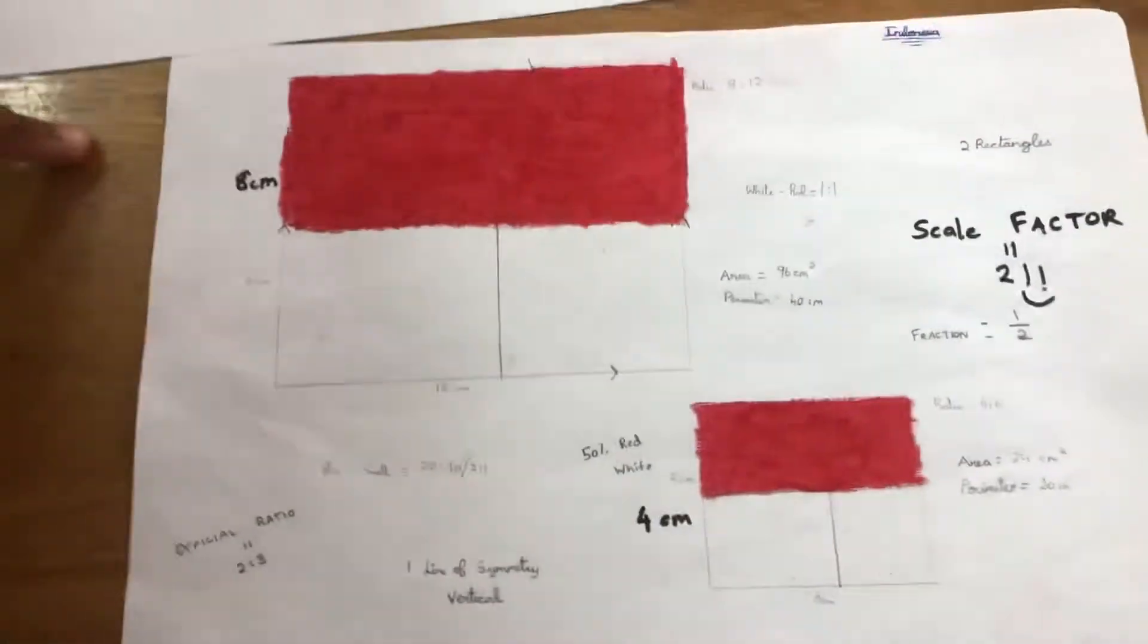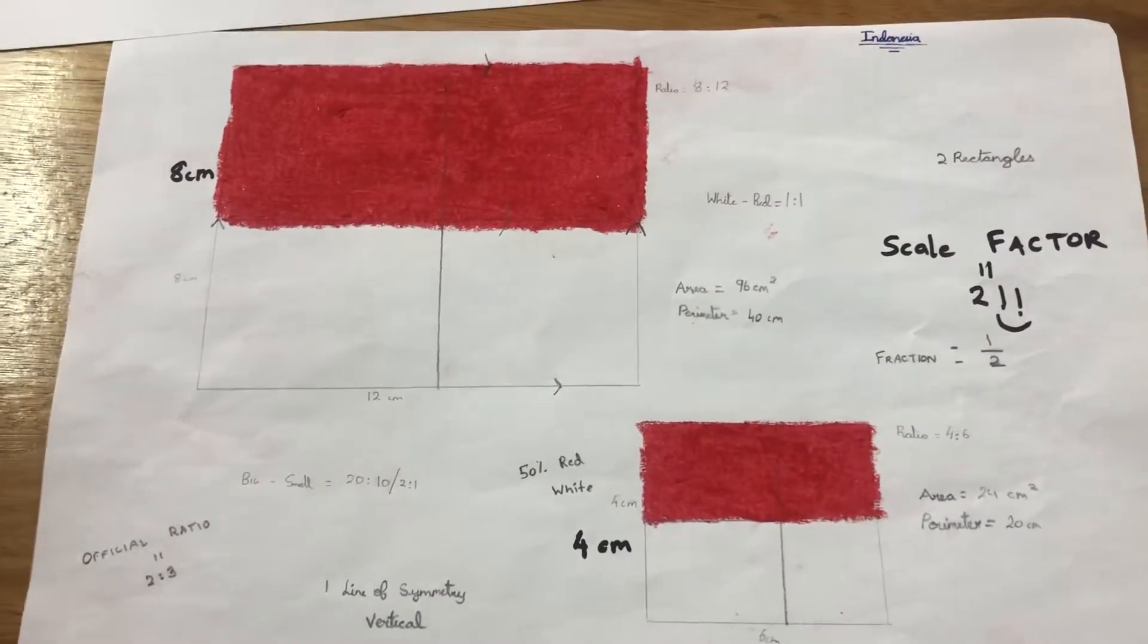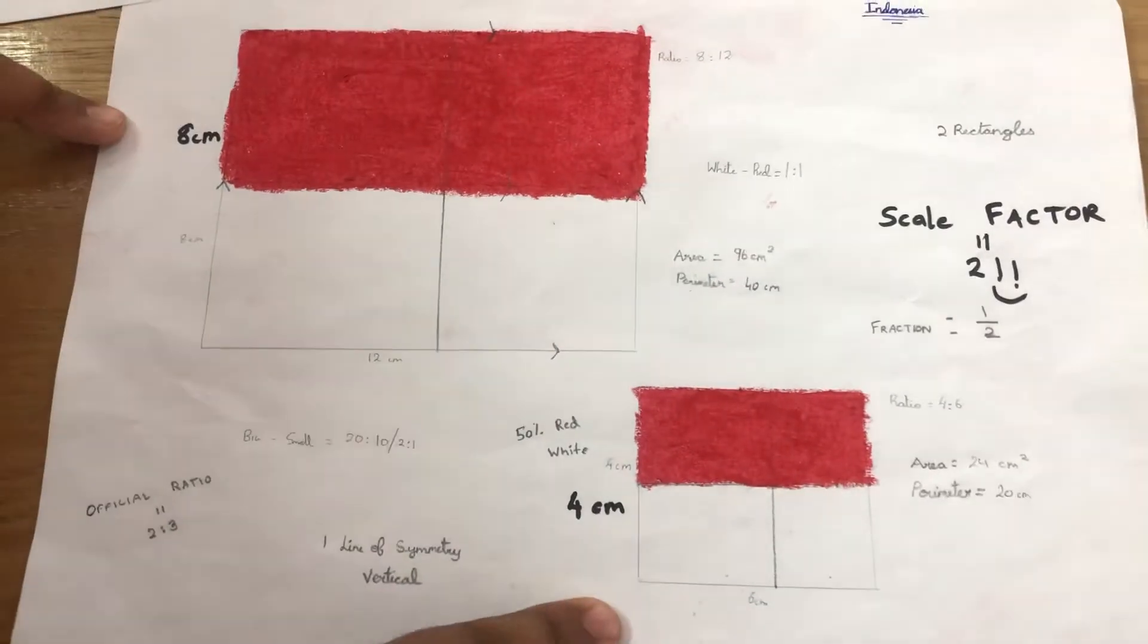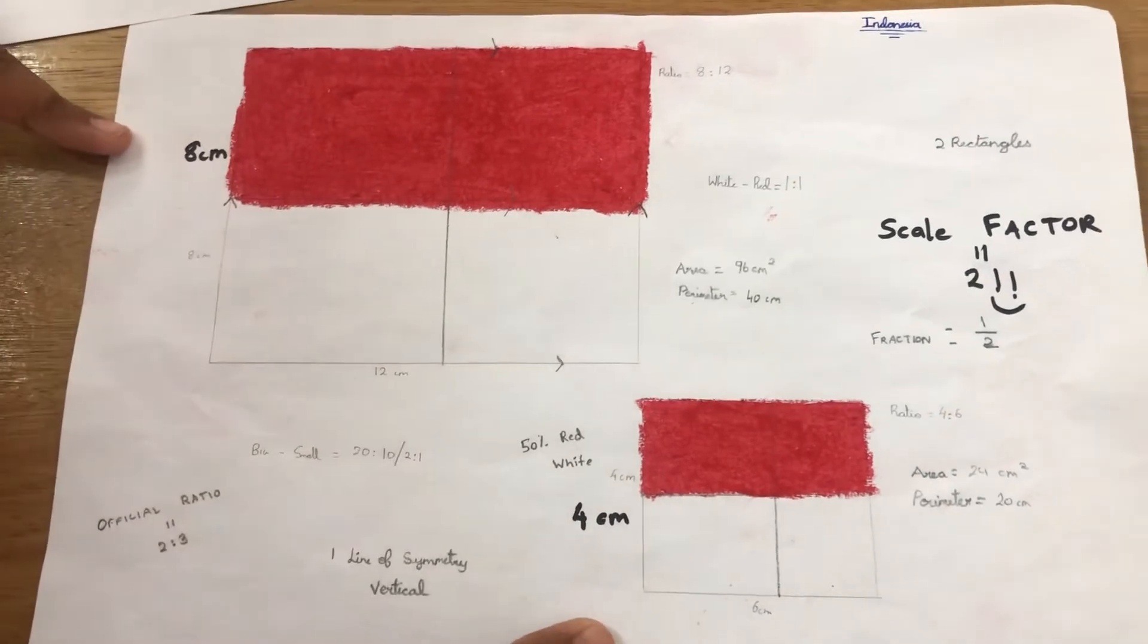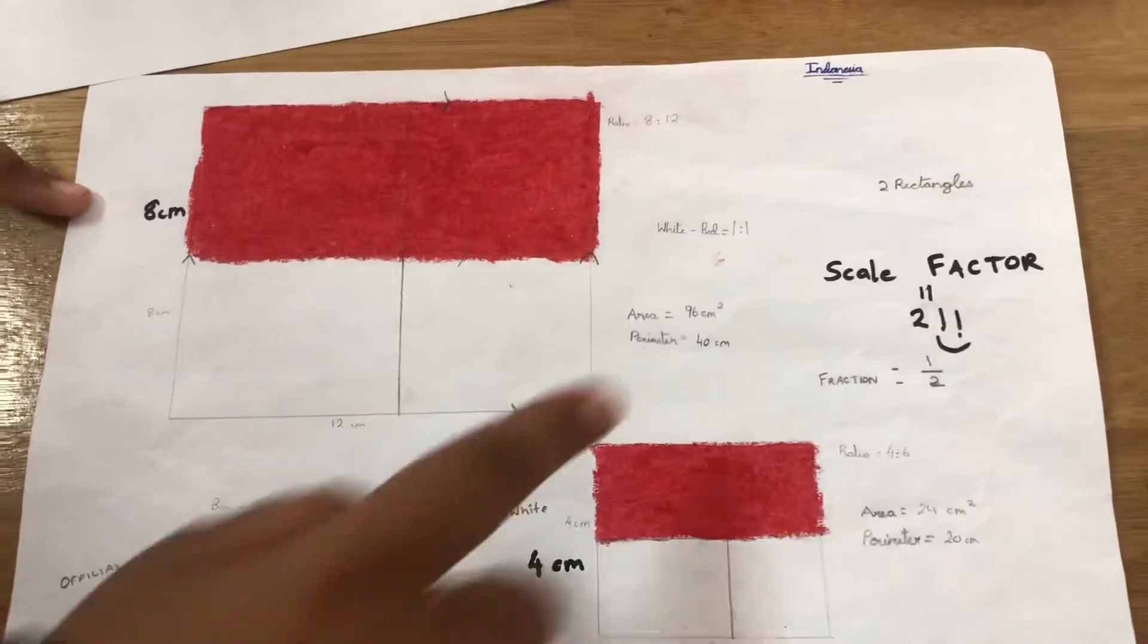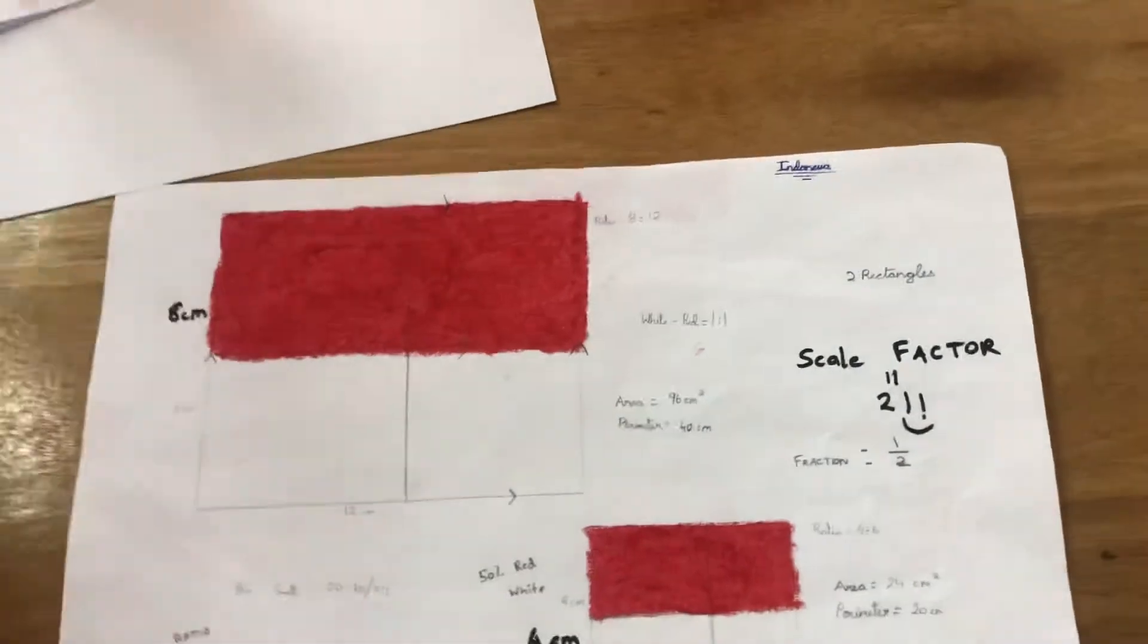What have we got next? So I have the Indonesian flag over here and I'm going to be doing scale factor. So the length of the big flag is 8 centimeters and the length of the small flag is 4 centimeters. So 8 divided by 4 is 2. So the scale factor is 2. Okay, so yes, it's width in that case but yes, scale factor remains the same as 2. Brilliant!